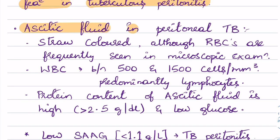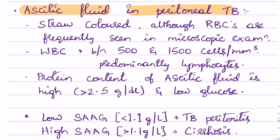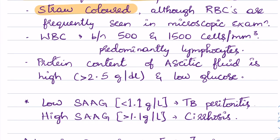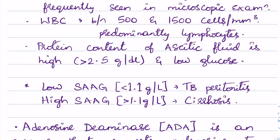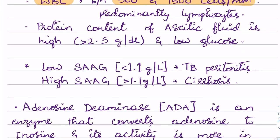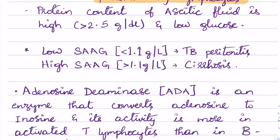The ascitic fluid in peritoneal TB is usually straw-colored, although RBCs are frequently seen on microscopic examination. WBCs range between 500 to 1500 cells per millimeter cube, predominantly containing lymphocytes. The protein content of the ascitic fluid is high — more than 2.5 grams per deciliter — with low glucose.